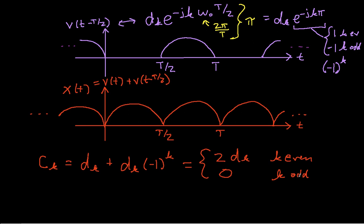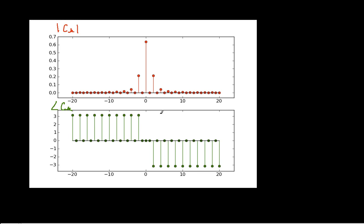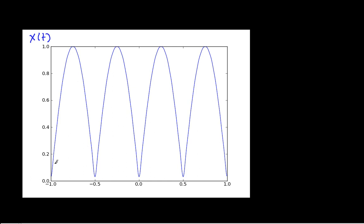There you have it — we actually now have the answer we were trying to find. We have the Fourier series coefficients for the rectified sine wave. I've plotted them so you can see what they look like. As you would expect, for odd values of k the magnitude of the Fourier series coefficient is 0. And to check the answer, I reconstructed the time waveform from these Fourier series coefficients, and you can see that it does look like a rectified sine wave.